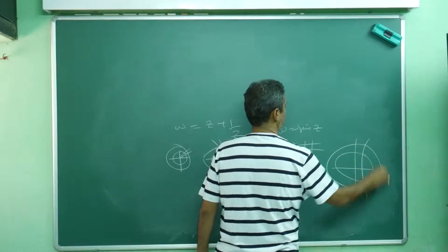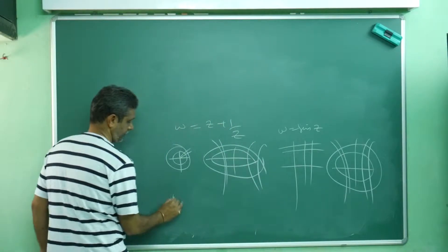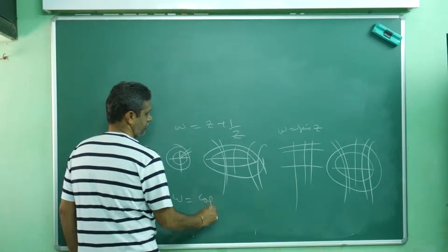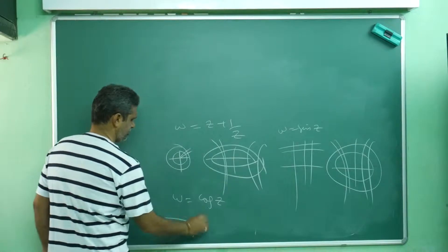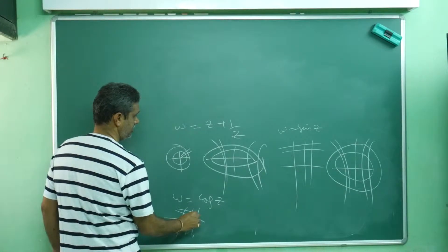Similarly, W equals cos Z. Same story. X equals constant, Y equals constant. This step transforms to what? This step transforms like this.